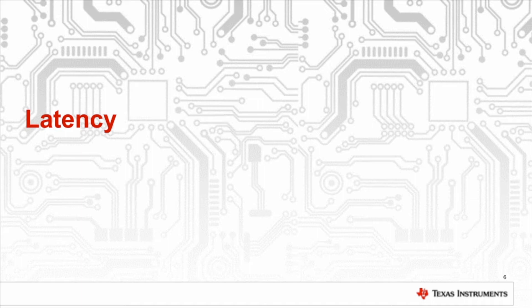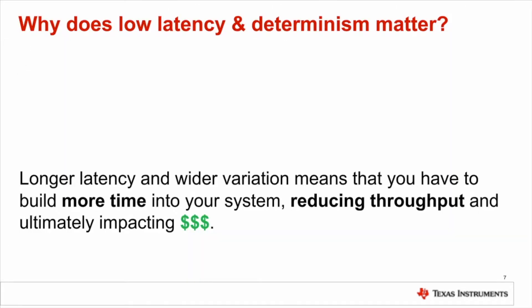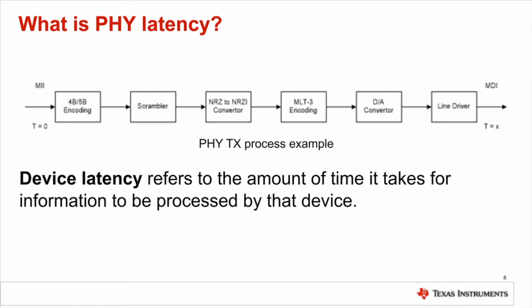I'm going to cover those three pieces in this talk, starting with latency, which addresses the determinism we were just discussing. Why should you care about latency and determinism? Latency actually impacts the amount of time it takes for your system to produce a unit or have an output at the other end. In terms that really matter, the better the latency, the lower the cost per unit of production. Let's define a couple of things: there's system latency and there's PHY latency. What you can see here is a representation of the transmission process for Ethernet PHYs. PHY latency refers to the amount of time it takes for information to be processed by the device.